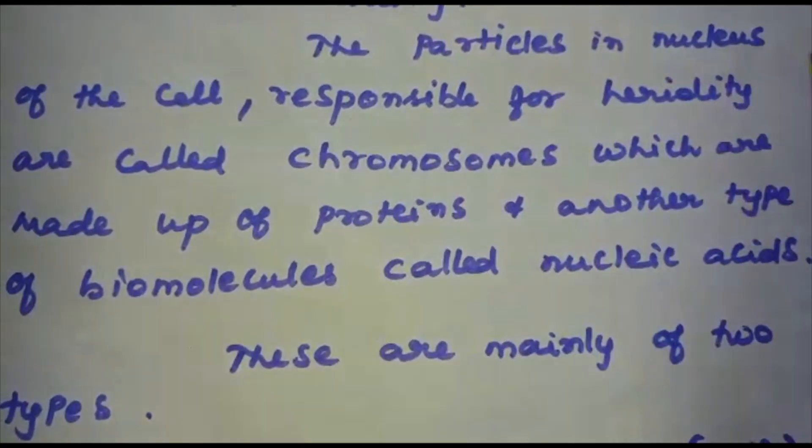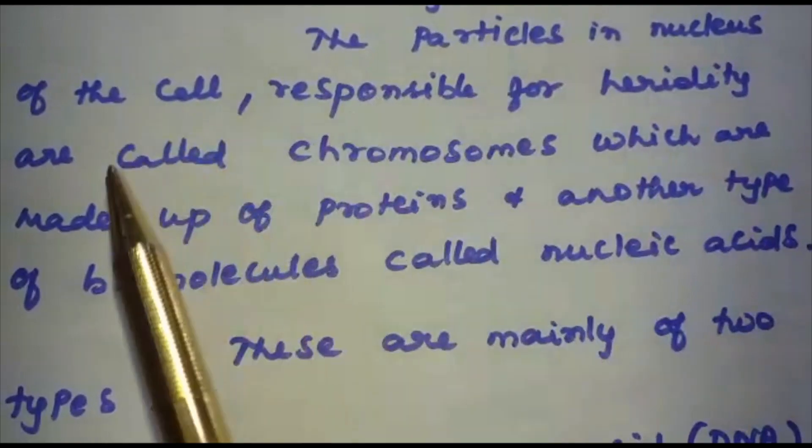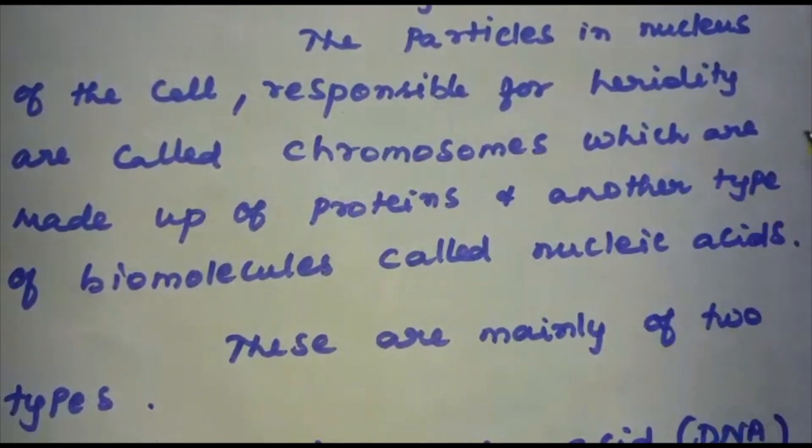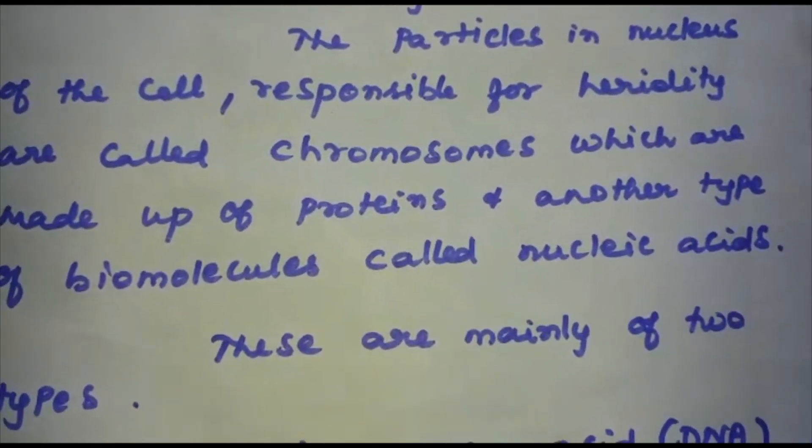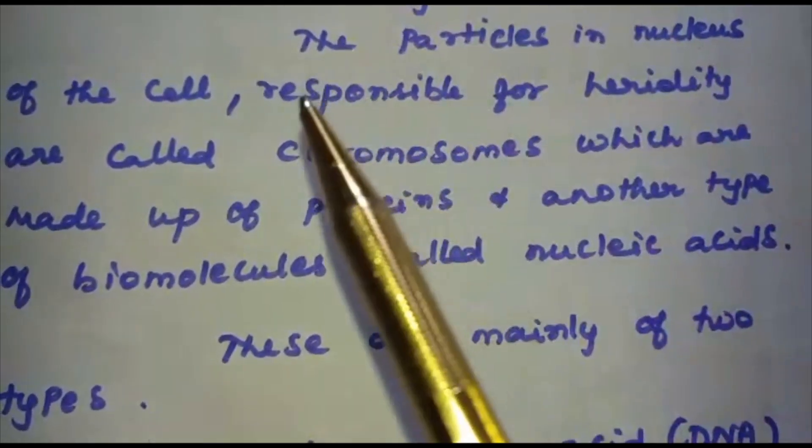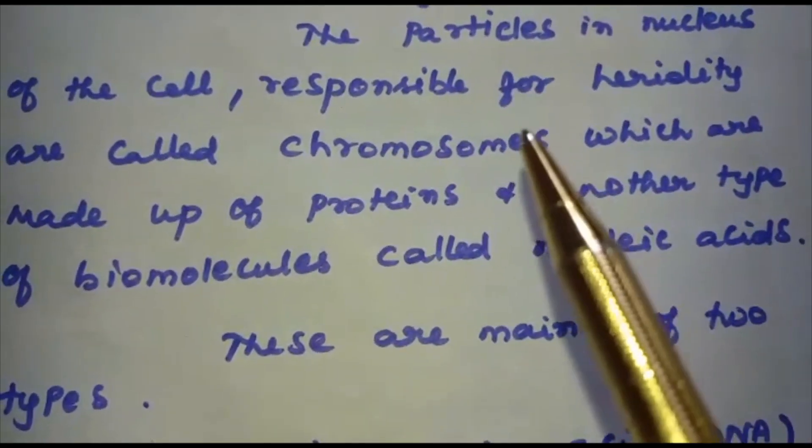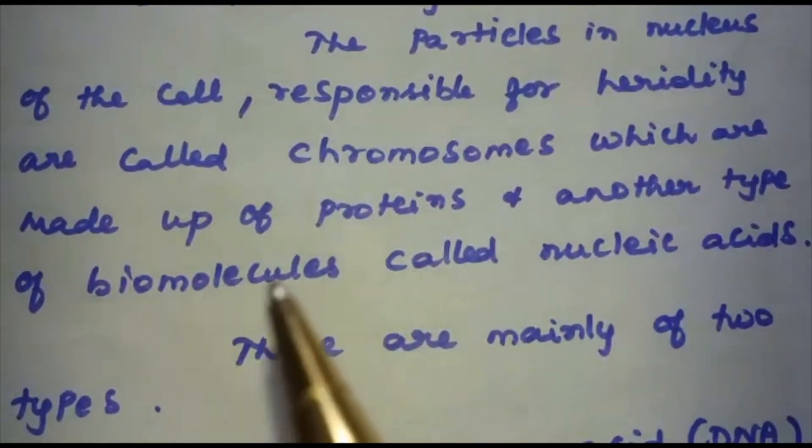The particles in the nucleus of the cell which are responsible for heredity are called chromosomes, which are made up of proteins and another type of biomolecules called nucleic acids. So the particles in the nucleus responsible for heredity are called chromosomes, and these chromosomes are made up of proteins and another type of biomolecules called nucleic acids.